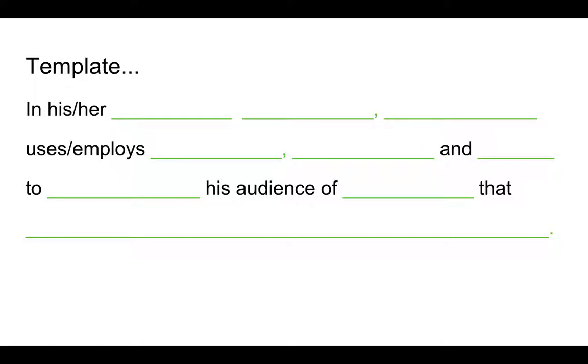Okay, so if we look at this whole statement, the entire SOAPSTone statement reads: 'In his 1989 memoir Lives on the Boundary, Mike Rose employs narrative mode, engaging dialogue, and descriptive imagery to persuade his audience of educational lawmakers that the educational system should be changed in order to make higher standards for students enrolled in remedial classes.'